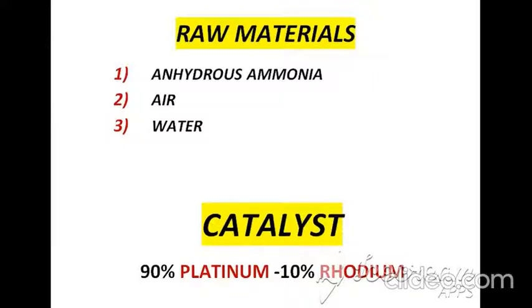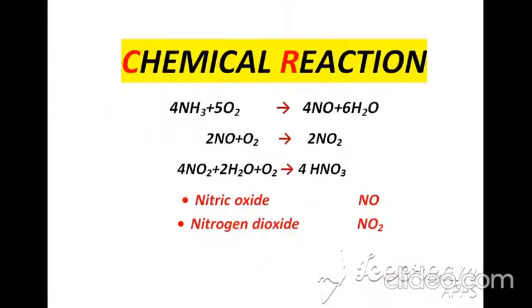To manufacture nitric acid, three types of raw materials are used: the first is anhydrous ammonia, the second is air, and the third is water. Also, a catalyst is used consisting of a mixture of 90% platinum and 10% rhodium.